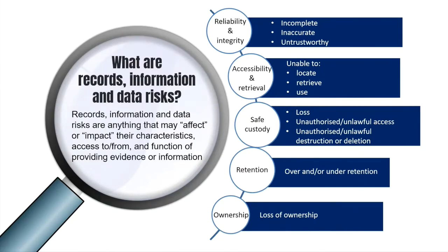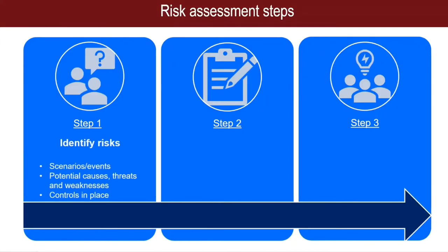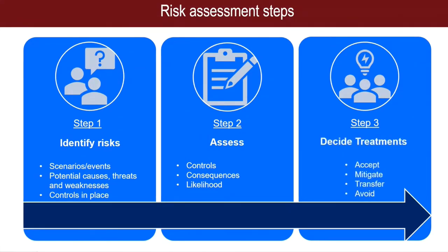So where do we start in assessing these risks? We begin by following three steps. Step one: identify the potential risk scenarios that may occur and their underlying causes, threats and weaknesses. This also includes identifying what controls are already in place, such as existing processes, policies or practices. Step two: assess what their consequences or impact may be and the likelihood of them occurring. Step three: decide how you are going to treat the risks — that is, are you going to respond by accepting the risk as is, applying controls to mitigate the risk, transferring or sharing the risk, or avoiding the risk completely, or maybe even a combination.